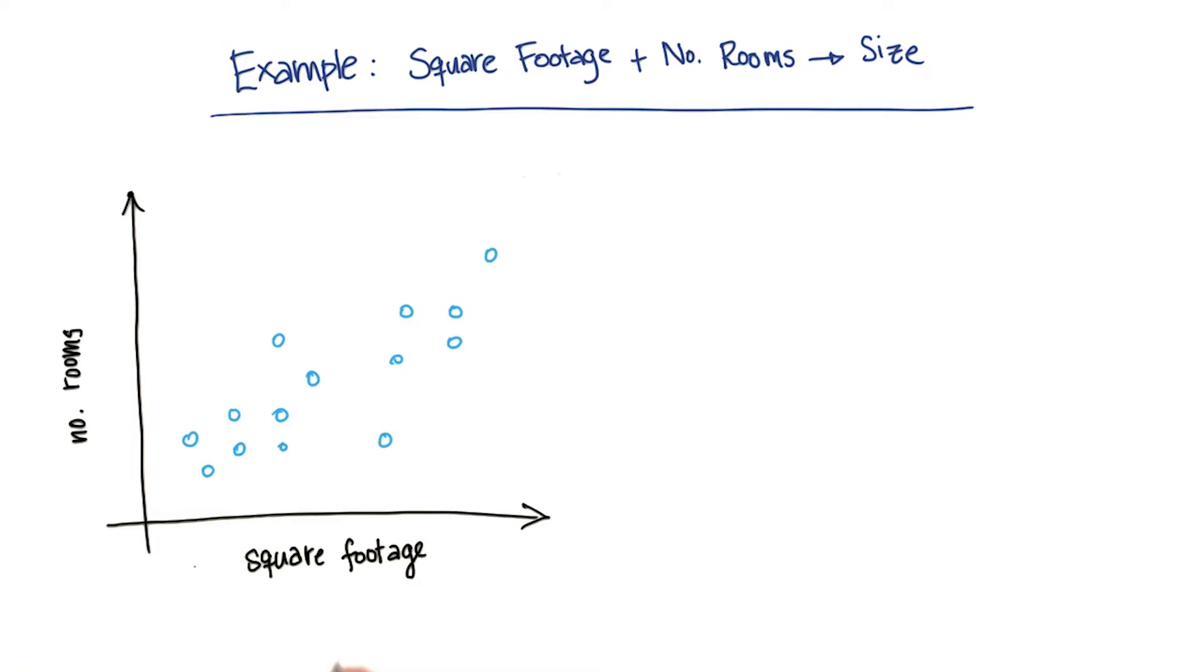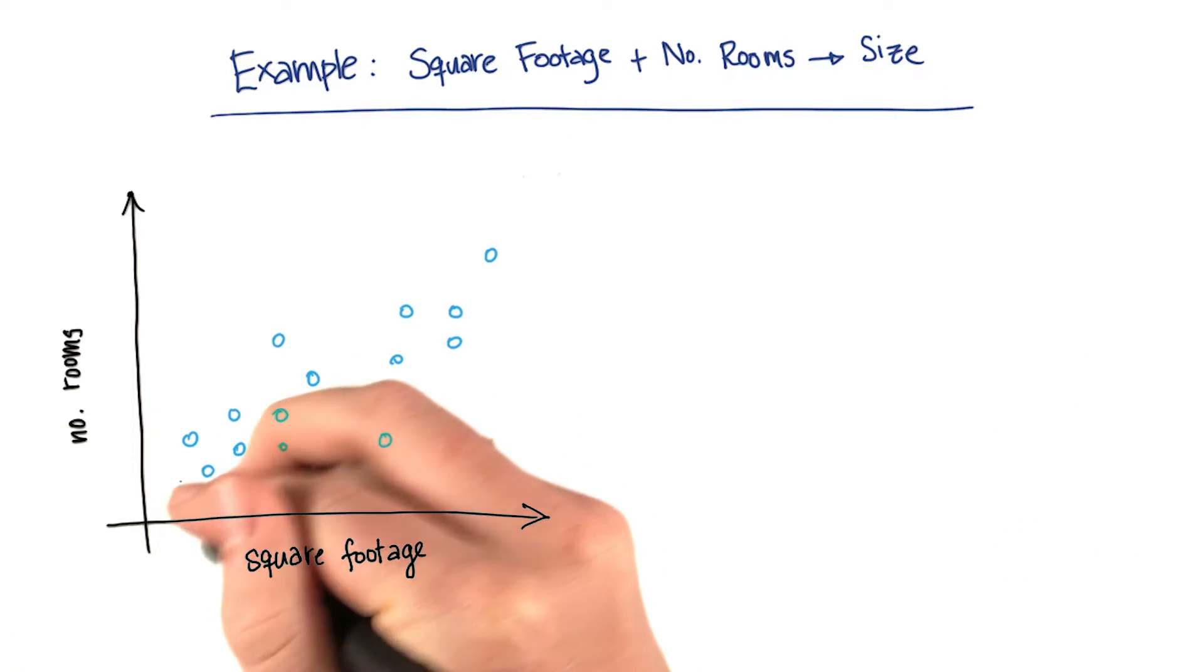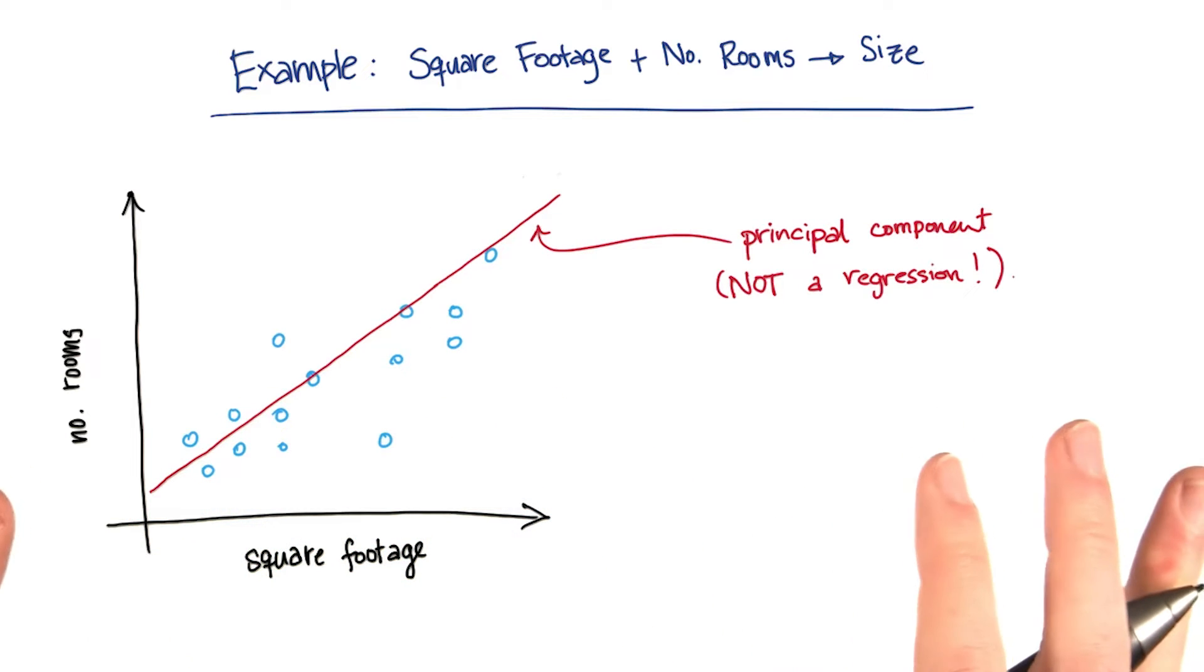Now what I'm going to do is I'm going to draw in the principal component. It will look something like this. I know this looks like a regression at this point, but it's not, and here's why.